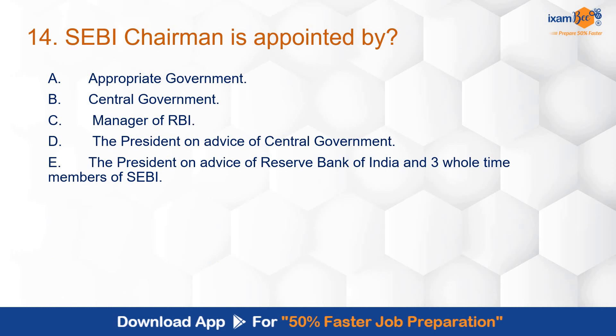Question 14: The SEBI chairman is appointed by whom? The correct answer is B — the President on the advice of the central government. This is as per section 4 of the SEBI Act. So the SEBI chairman is appointed by the President on the advice of the central government.